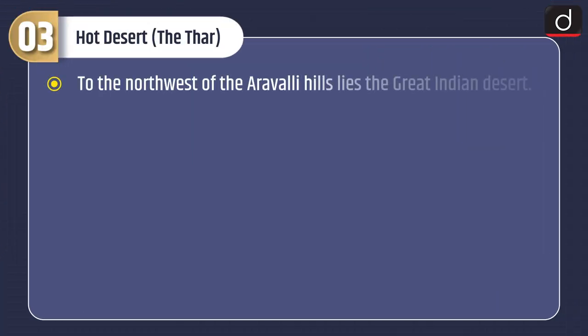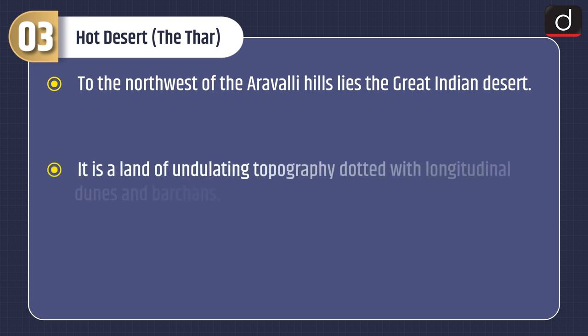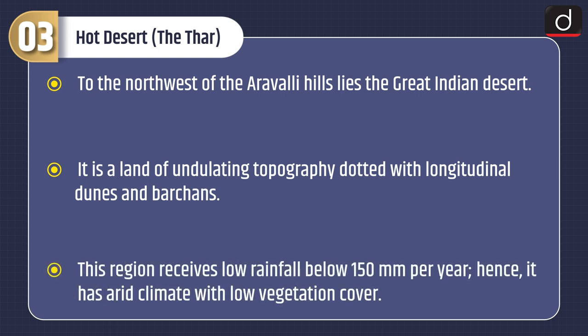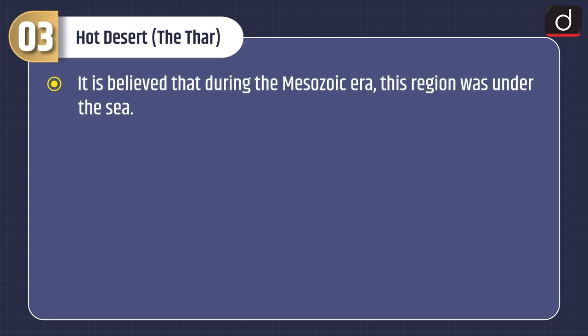Now let's discuss about the Hot Desert, that is the Thar. Through the northwest of the Aravalli Hills lies the Great Indian Desert. It is a land of undulating topography dotted with longitudinal dunes and barchans. This region receives low rainfall below 150 mm per year, hence it has an arid climate with low vegetation cover. It is believed that during the Mesozoic era, this region was under the sea.